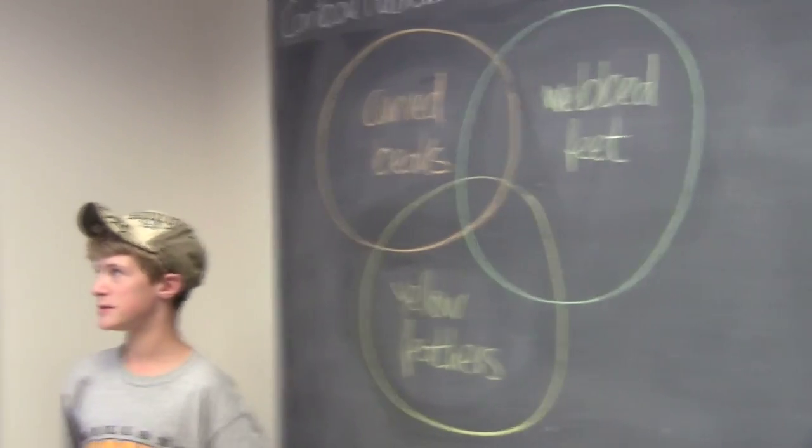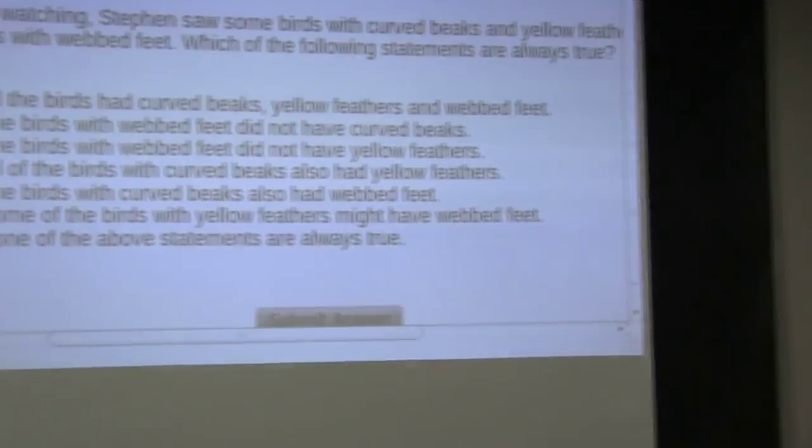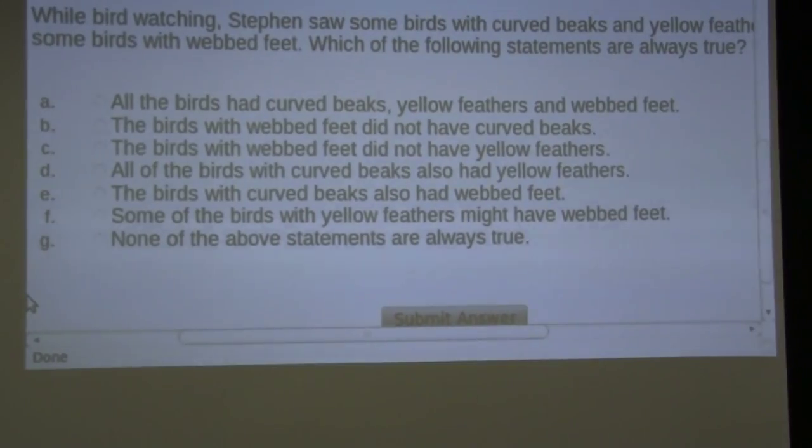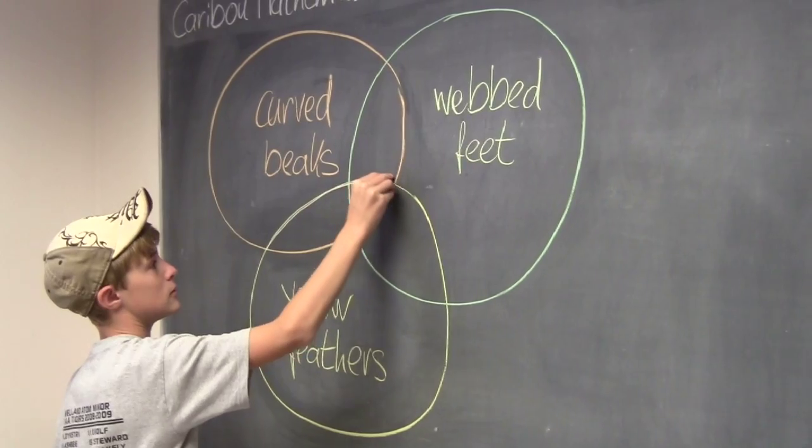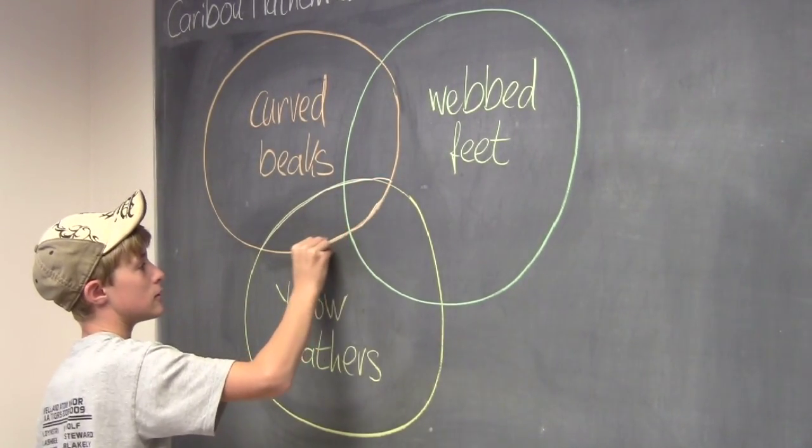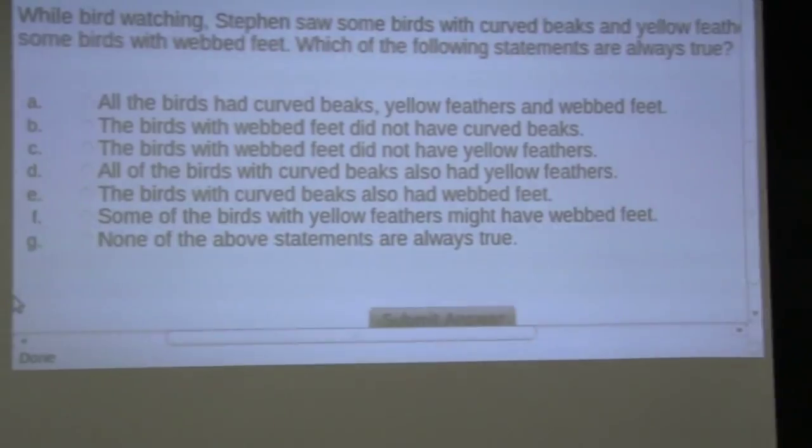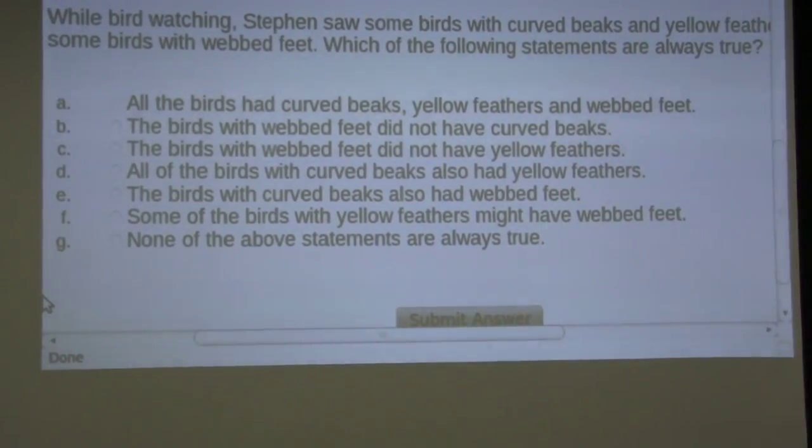So let's look at the first statement. Stephen saw some birds with curved beaks and yellow feathers. So I would have to circle this. And now the second statement, Stephen also saw some birds with webbed feet.